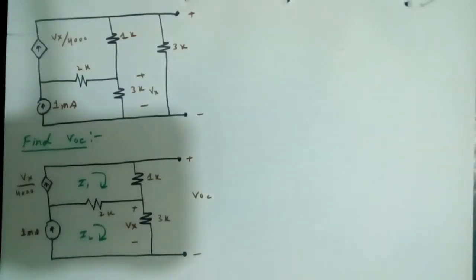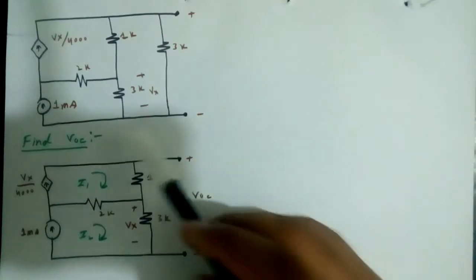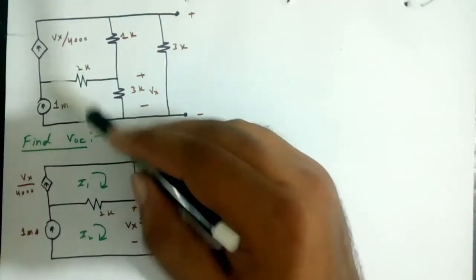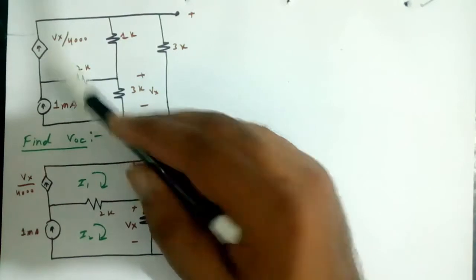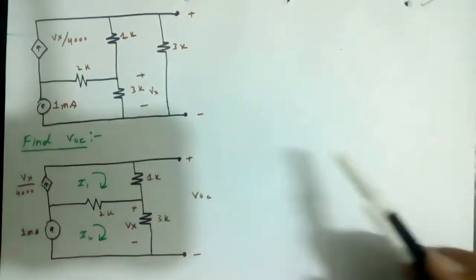In this video I will show you how you can apply an order analysis when you face a dependent source. You can see in this figure there are two sources — this is a dependent source and this is an independent source.